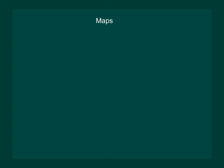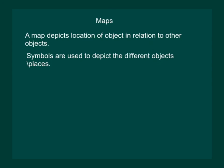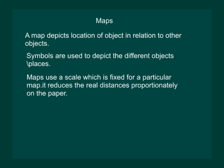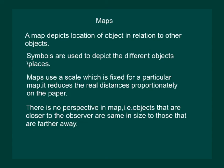Let us describe some special features of maps. A map depicts location of object in relation to other objects. Symbols are used to depict the different objects or places in a map. Maps use a scale which is fixed for a particular map. It reduces the real distance proportionately on the paper. And there is no perspective in a map. That is, objects that are closer to the observer are same in size to those that are farther away.